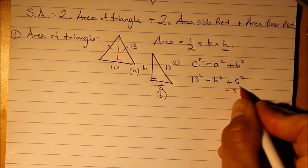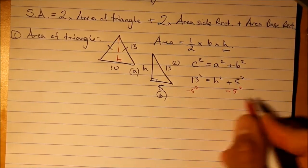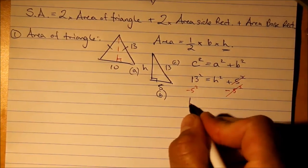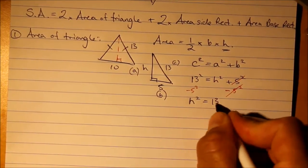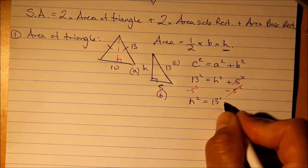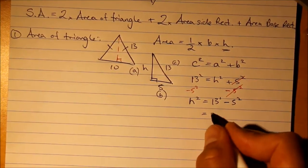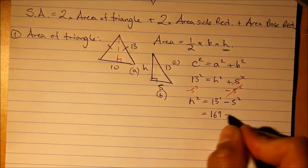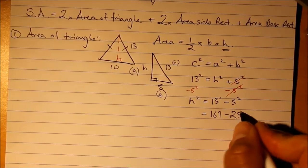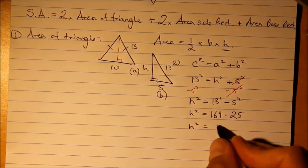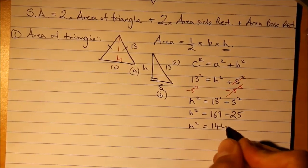Okay. So, you should get something like this. Thirteen squared is 169 minus 25. Okay. And as you work down, we find here, that's 144.